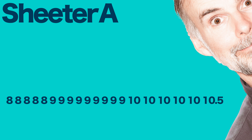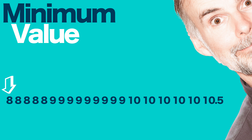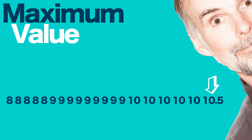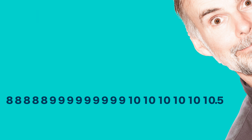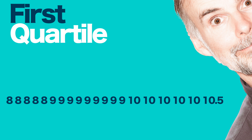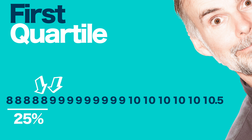For sheeter A's measurements, first you identified the minimum value in the data set, then the maximum value. Next, you determined how spread out the other measurements are between the minimum and maximum. To do that, you identified the first quartile, which is the value under which 25% of the data points are found. For sheeter A's 20 measurements, the first quartile is the fifth and sixth measurements added together and divided by two, resulting in the value of 8.5 millimeters.